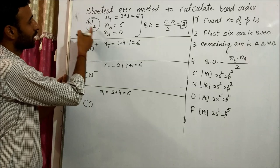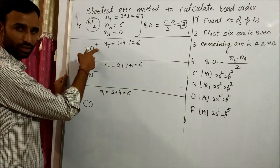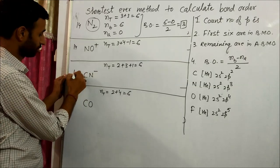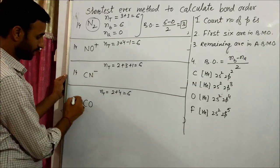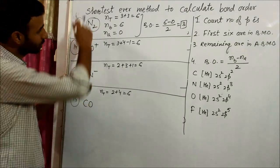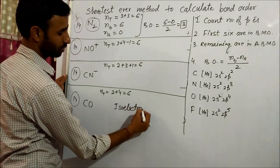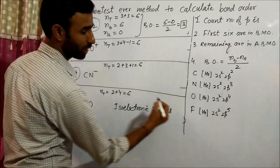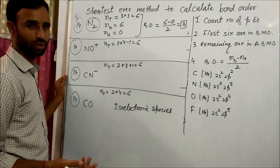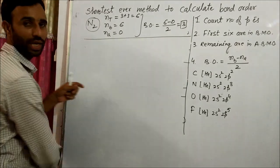Similarly, CN- has carbon with two p electrons plus nitrogen with three, plus one added electron, giving six total — bond order three. CO has two from carbon plus four from oxygen, also six — bond order three. These are called isoelectronic species. Isoelectronic species have the same number of electrons and therefore the same bond order.